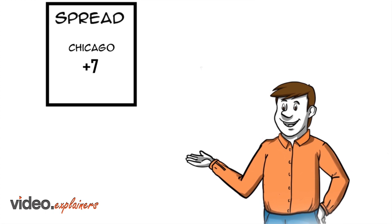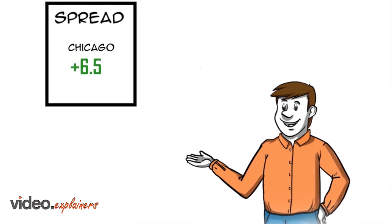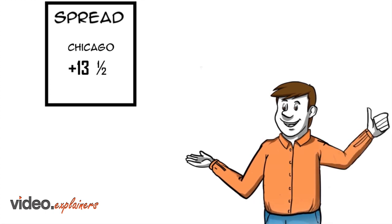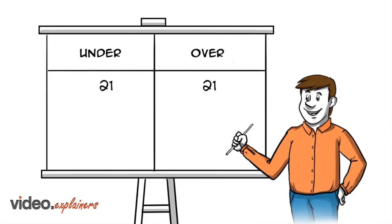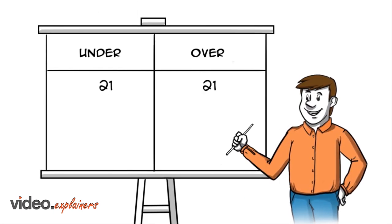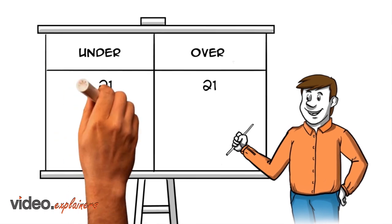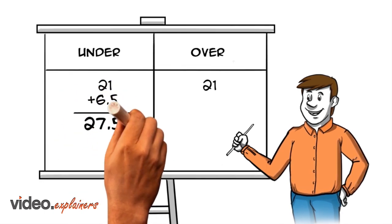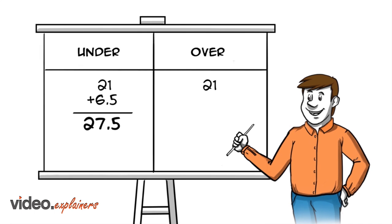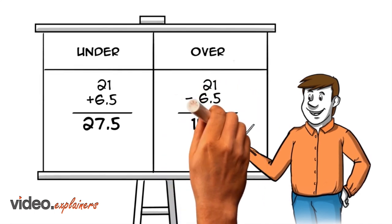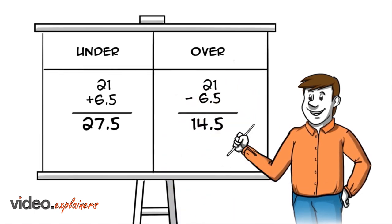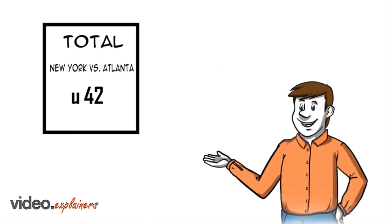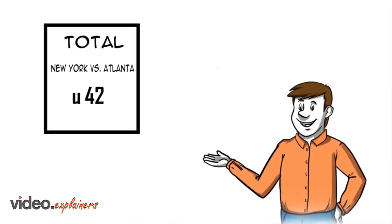Chicago can now lose by 13.5. Purchased points also shift totals in your favor. Under lines are higher, over lines are lower. New York versus Atlanta is now under 48.5.